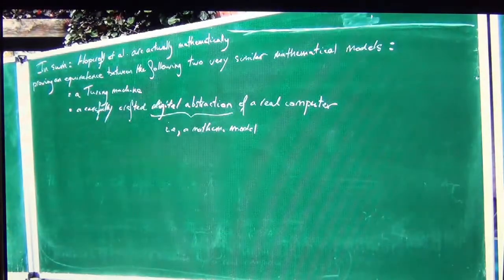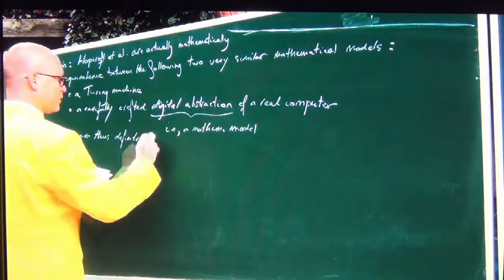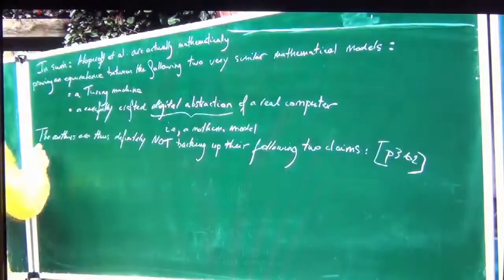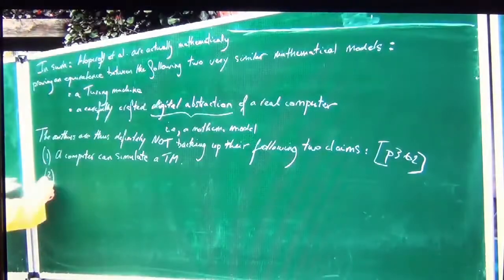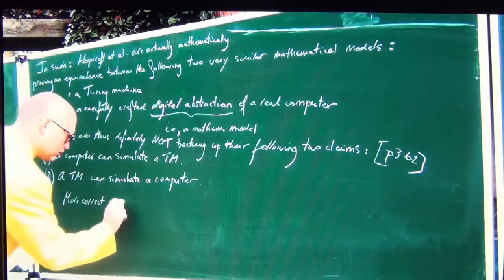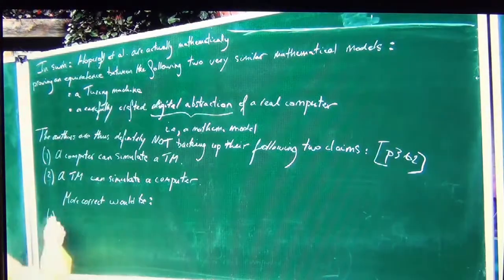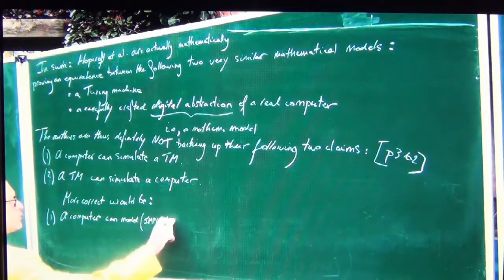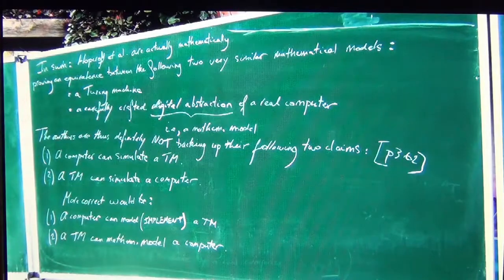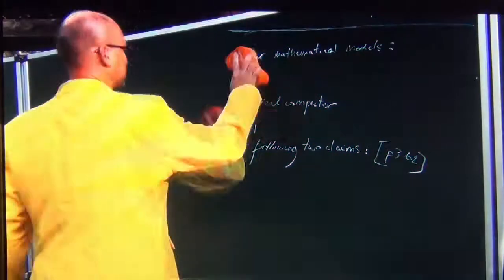The authors are thus definitely not backing up their claims that a computer can simulate a Turing machine and a Turing machine can simulate a computer, when 'computer' is meant to be the physical object. More correct would be: a computer can implement a Turing machine, and a Turing machine can serve as a mathematical model of a computer. That's the way an engineer would put it — it's the correct way, but it's not as profound as what computer scientists would like to have.